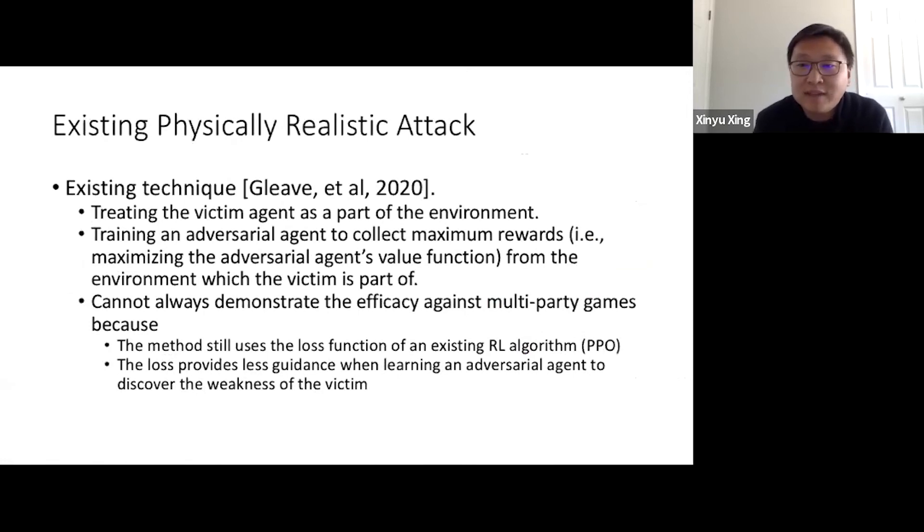In the past, there is only one work that successfully demonstrates the effectiveness of a physically realistic attack. The work was proposed in 2020 by a group of researchers from UC Berkeley. In that work, the researchers treat the victim agent as part of the environment. Then, they train an adversarial agent to collect the maximum reward from the environment where the victim agent is located. In UC Berkeley's work, the researchers demonstrate the effectiveness of their adversarial agent in many multi-party games. However, they cannot always demonstrate efficacy of this attack against multi-party games, because the method they follow uses the loss function of an existing RL algorithm called PPO. The loss function in PPO provides less guidance when learning an adversarial agent to discover the weakness of the victim.